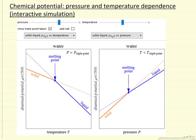This interactive simulation demonstrates how pressure and temperature influence chemical potential, mostly for a single component.